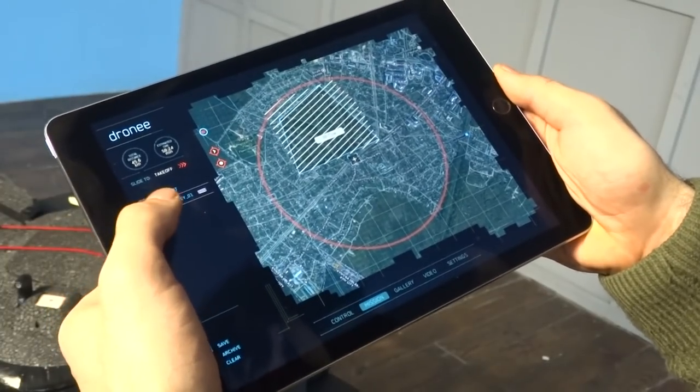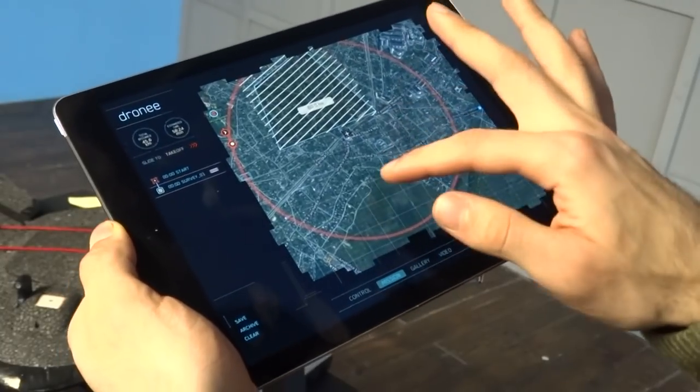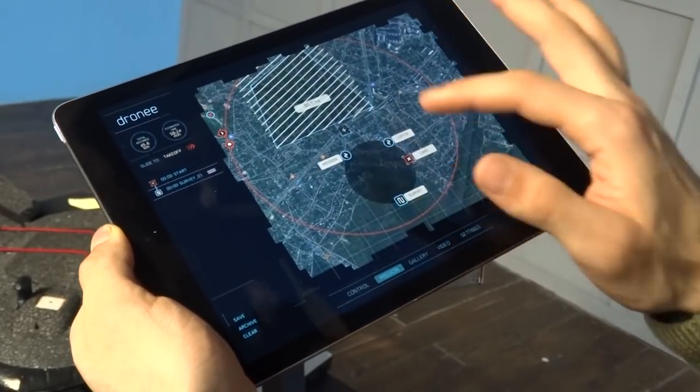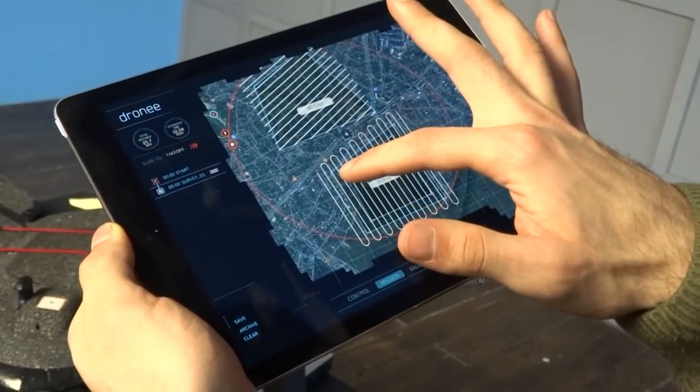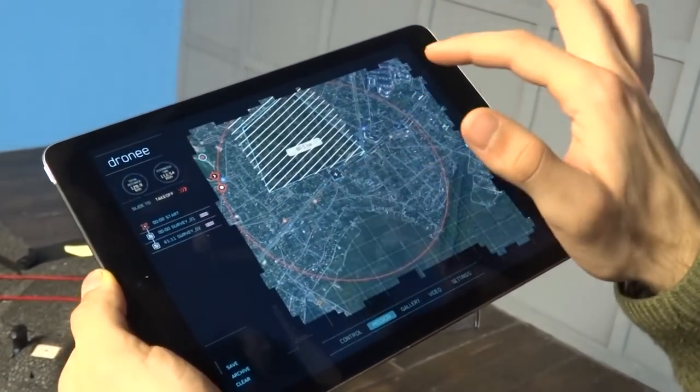On the left, you can see the flight tree. You can see the start and survey. If you want to add one more survey here, hold your finger and select the survey. Adjust, change the flight direction, tap one more time.